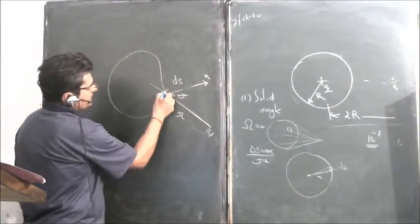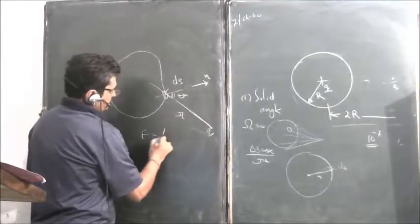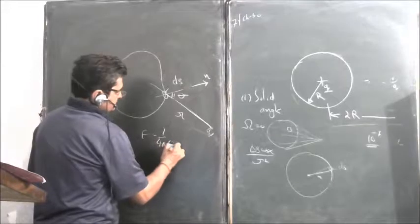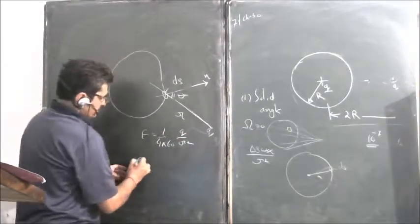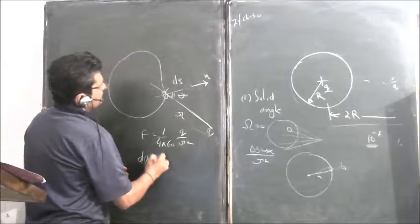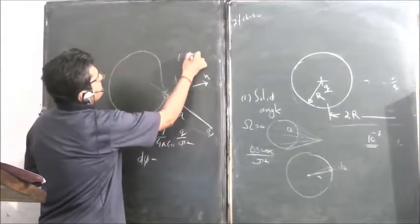So what is the electric field at this point because of Q? E is equal to 1 upon 4 pi epsilon naught Q upon R square. And what is the flux? Flux would be E dot dS.